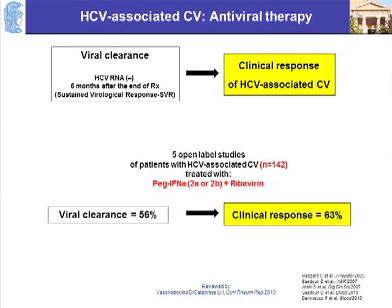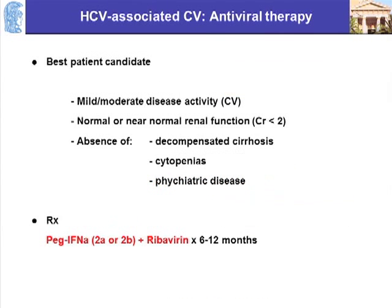What is the efficacy of antiviral therapy alone? It appears that about 60% of patients, if you give pegylated interferon-alpha and ribavirin, clear the virus, and about the same percentage have a good clinical response — so 40% do not respond. The best candidates are patients with mild to moderate disease activity and normal or near-normal renal function. The treatment of choice is pegylated interferon-alpha and ribavirin for 6 to 12 months.